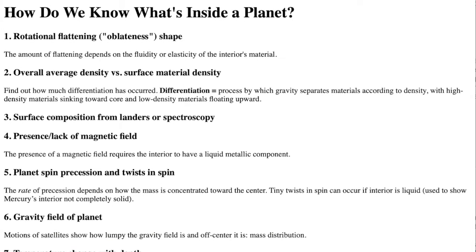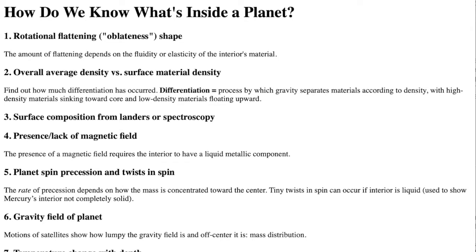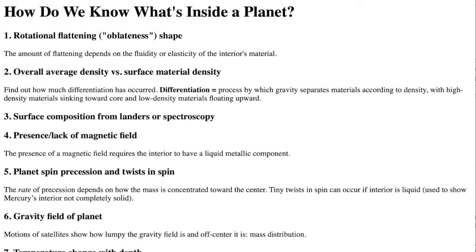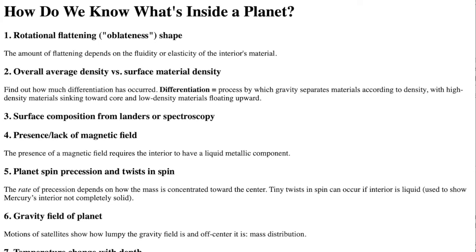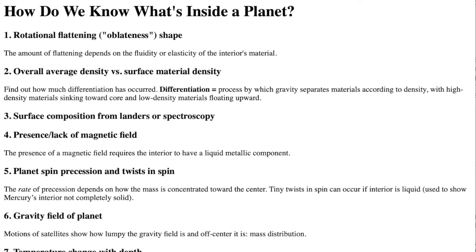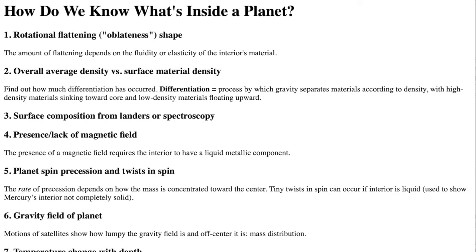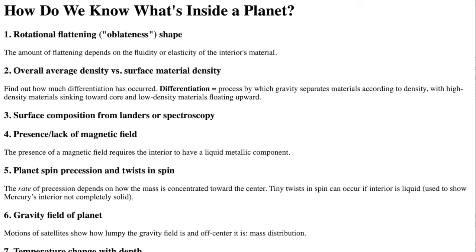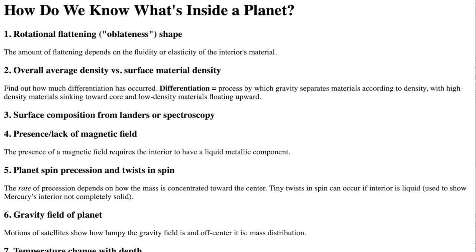We can determine the composition of surface and atmosphere material from landers or remotely with spectroscopy. The presence of a magnetic field requires the interior to have a liquid metallic component. So if there's a global magnetic field, it means there must be some liquid metal in the interior.